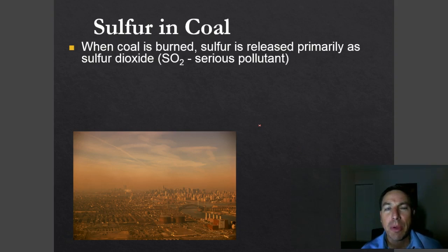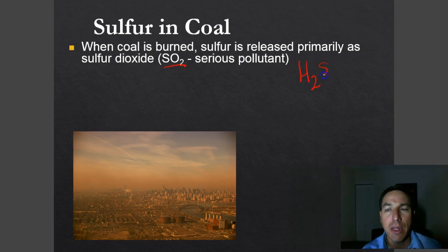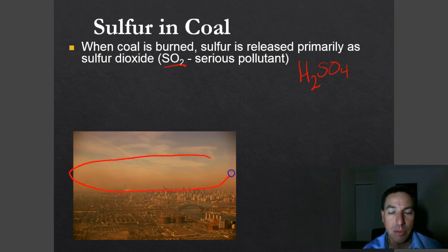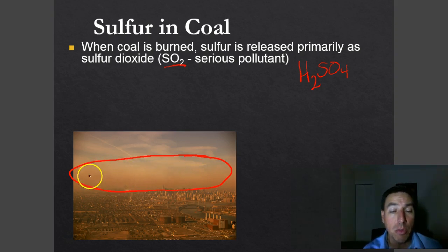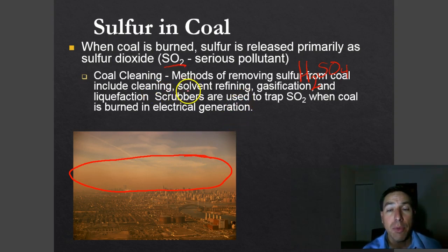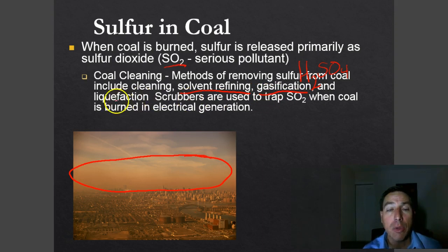Sulfur is a huge problem. When we burn coal, sulfur dioxide is released, and when SO2 mixes with water in the atmosphere we get H2SO4 — sulfuric acid. You can see a brown sulfur-based cloud over a city, full of sulfur dioxide and particulate matter. There are ways to remove this SO2: solvent refining treats coal with solvents to remove SO2, but that is expensive and lowers net energy. We can also do coal gasification, liquefaction, or use scrubbers, which is the most common method at power plants.